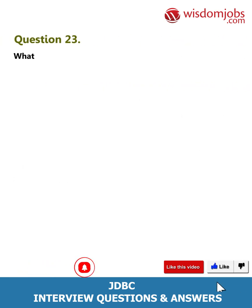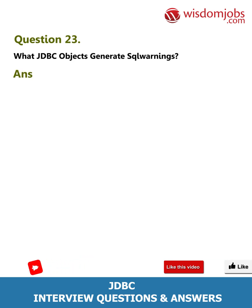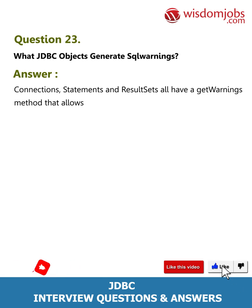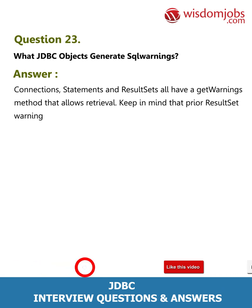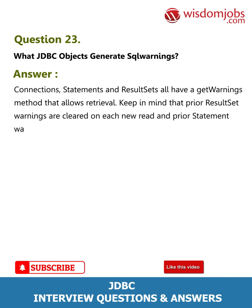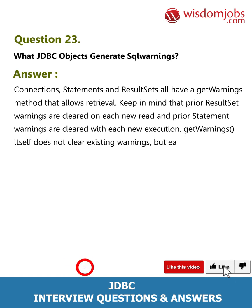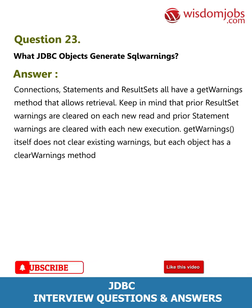Question 23: What JDBC objects generate SQL warnings? Answer: Connections, Statements, and ResultSets all have a getWarnings() method that allows retrieval. Keep in mind that prior ResultSet warnings are cleared on each new read, and prior Statement warnings are cleared with each new execution. getWarnings() itself does not clear existing warnings, but each object has a clearWarnings() method.